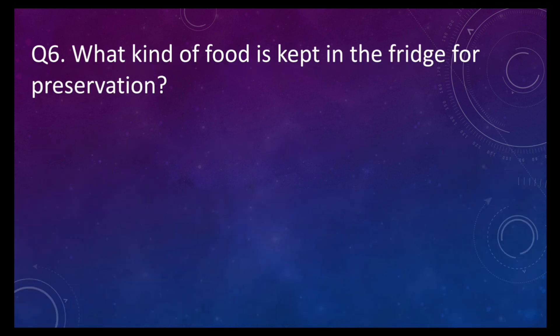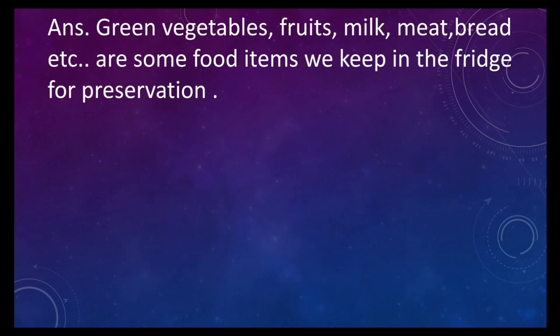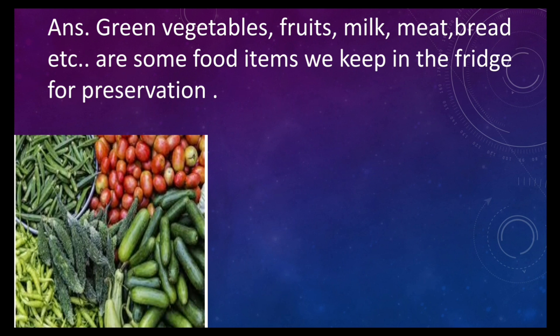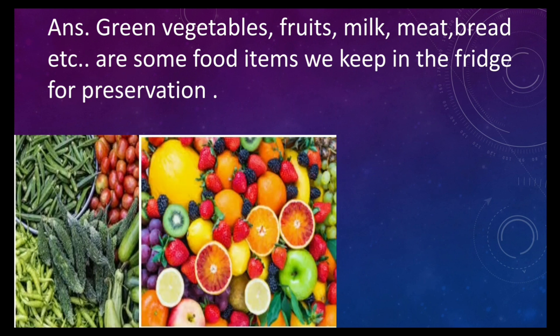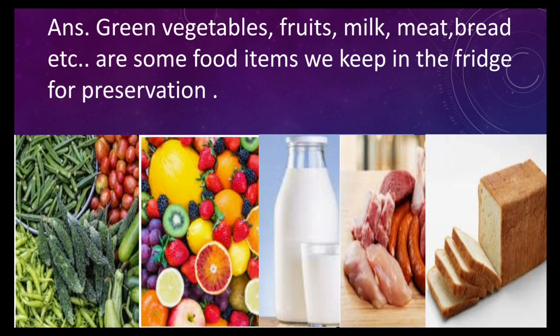Question number six: what kind of food is kept in the fridge for preservation? Refrigeration is one method of preservation. Low temperature in the fridge stops the growth of microbes. The answer is: green vegetables, fruits, milk, meat, bread, etc. are some food items we keep in the fridge for preservation.